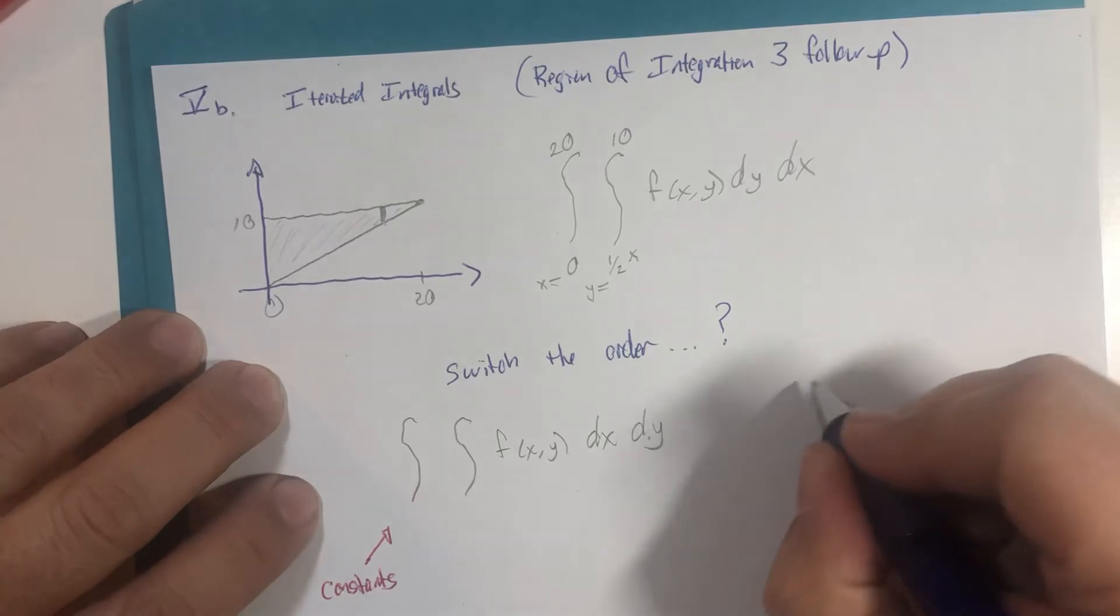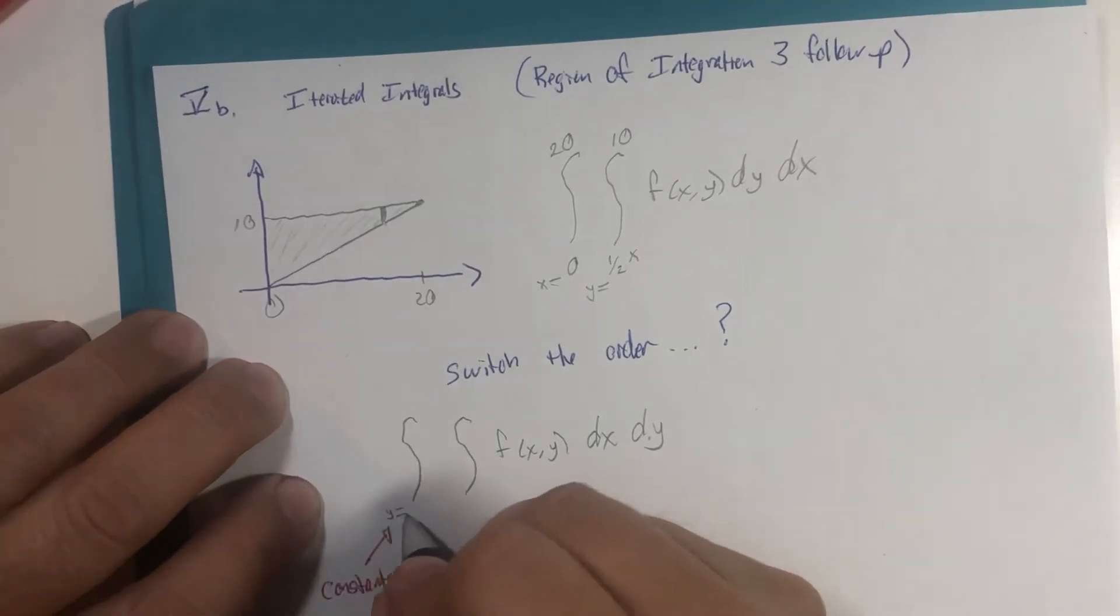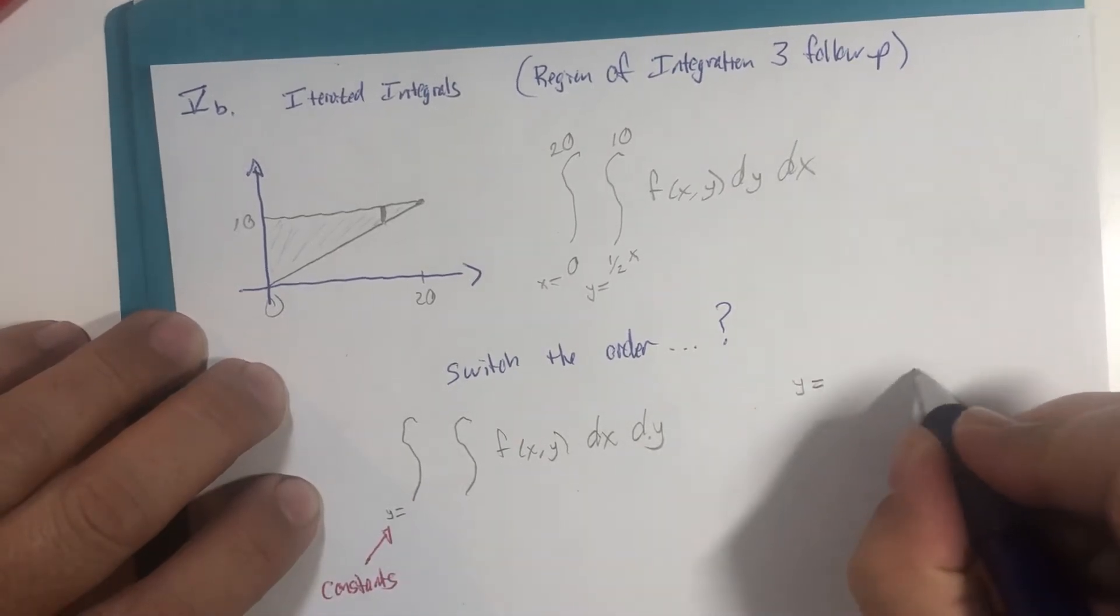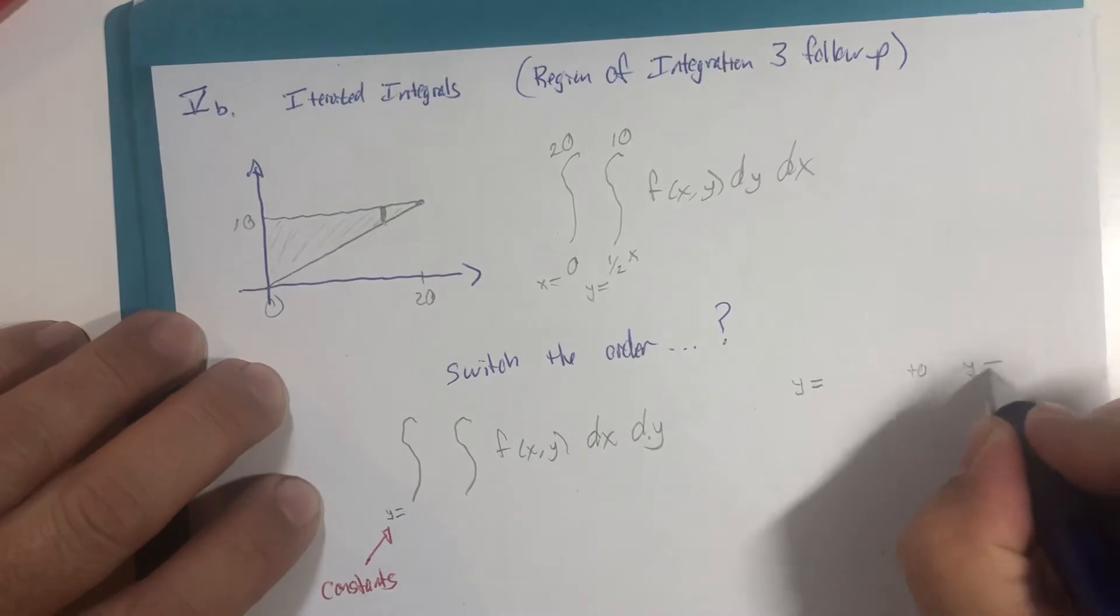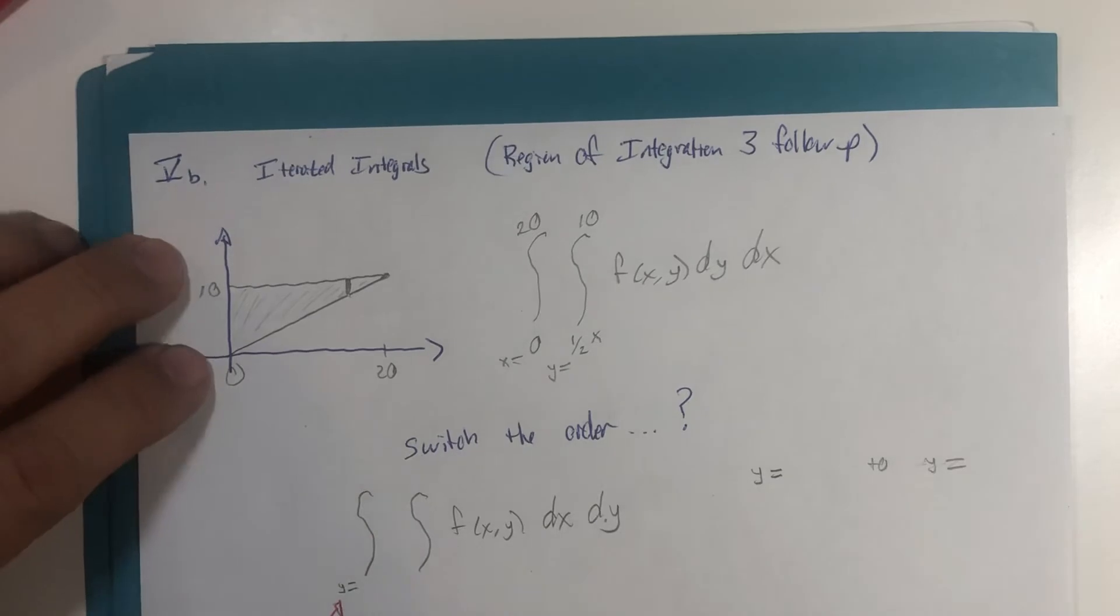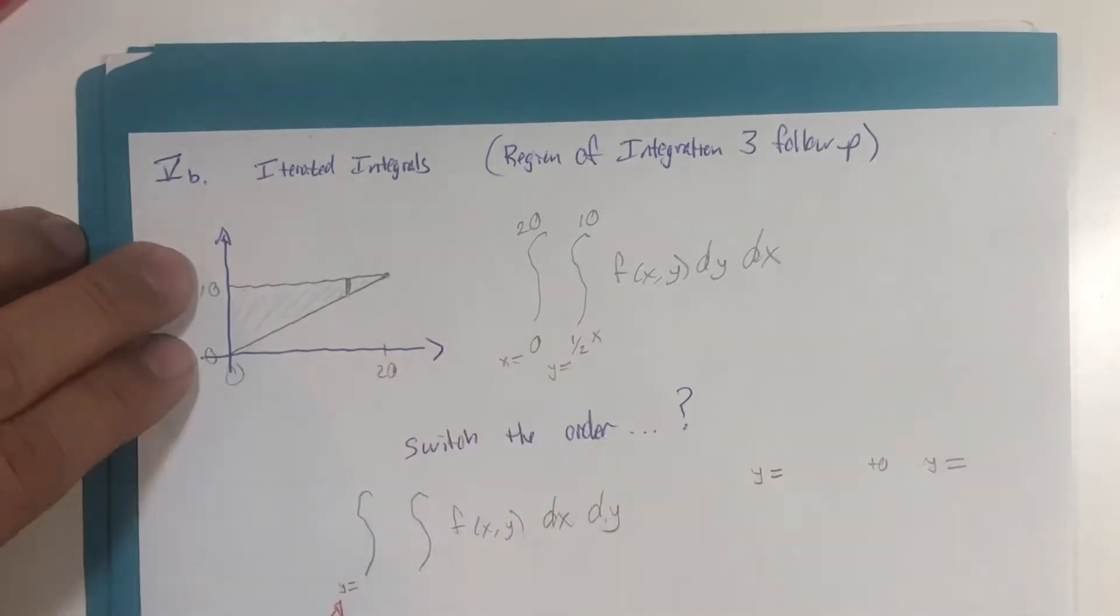I think of this in terms of if y is going to be over here, I'm going to think of this from low to high, from bottom to top, so to speak. And in this particular graph, the y values go from 0 to 10.